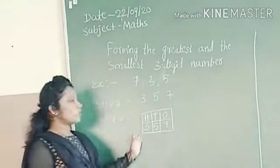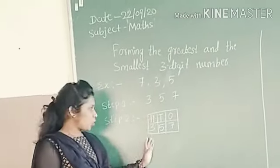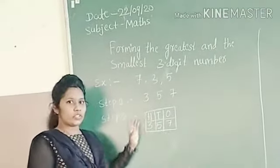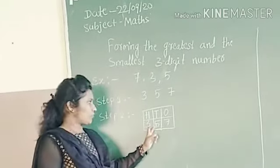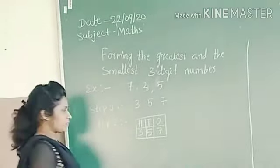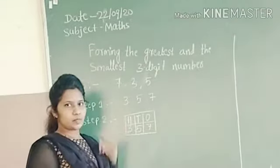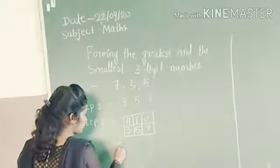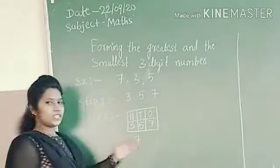So the smallest 3-digit number with the given digits is 357. This is the smallest 3-digit number.